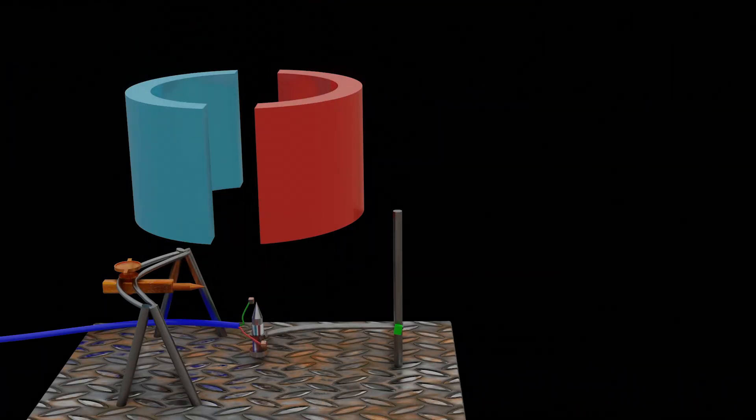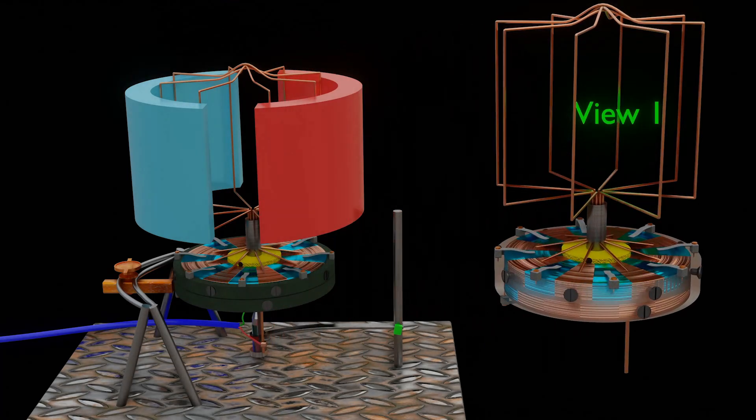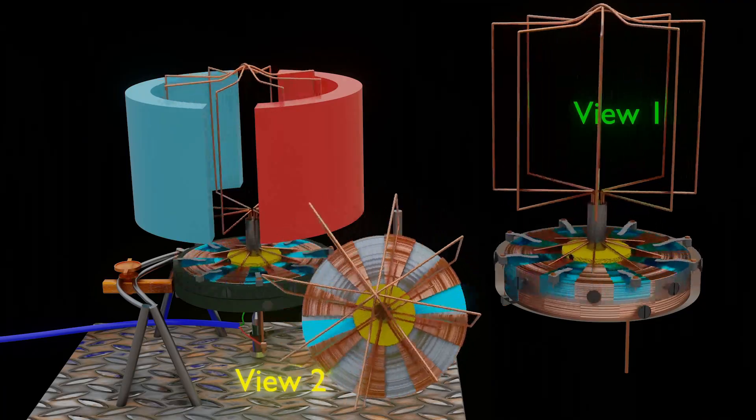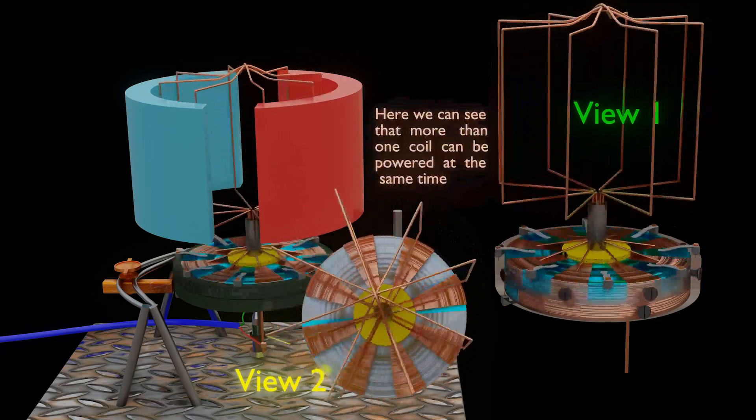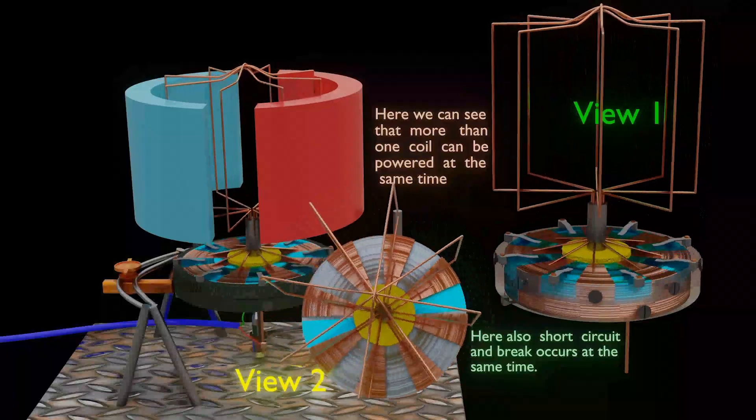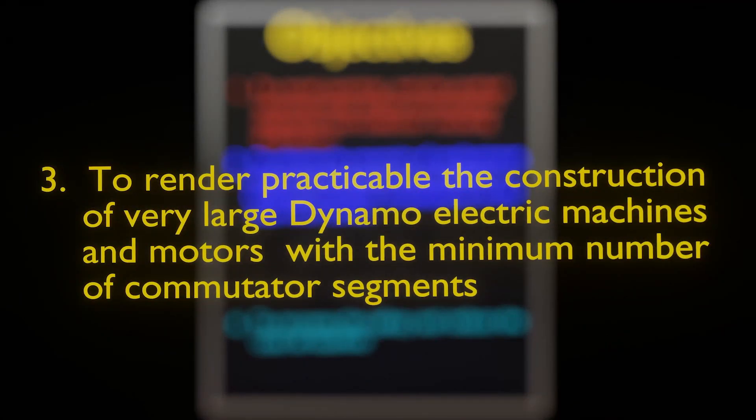Now, with a slight change in design, we can power more than one coil at the same time. This makes the construction of very large dynamo-electric machine practicable with this commutator design. And note, we have not added any extra commutator segments here. We have just split the previous commutator segment. So Tesla's third objective has been fulfilled.